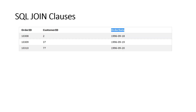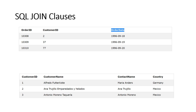This is the orders table — it has order ID, customer ID, and order date. The customers table has customer ID, customer name, contact name, and country. If we see, the customer ID in the orders table is also mentioned in the customers table. This tells us which customers have placed orders. So we will use a join to check which customer placed which order.